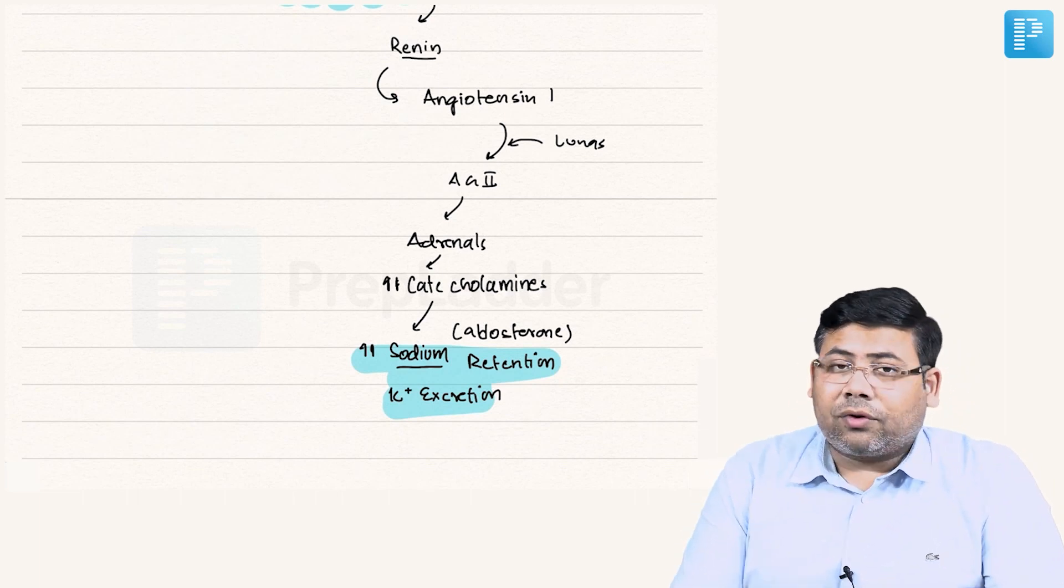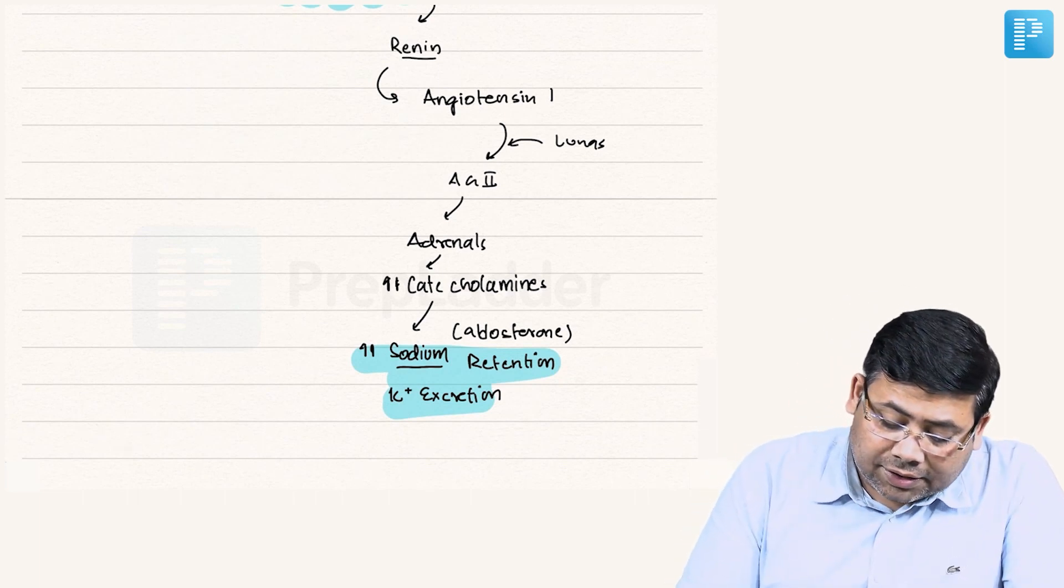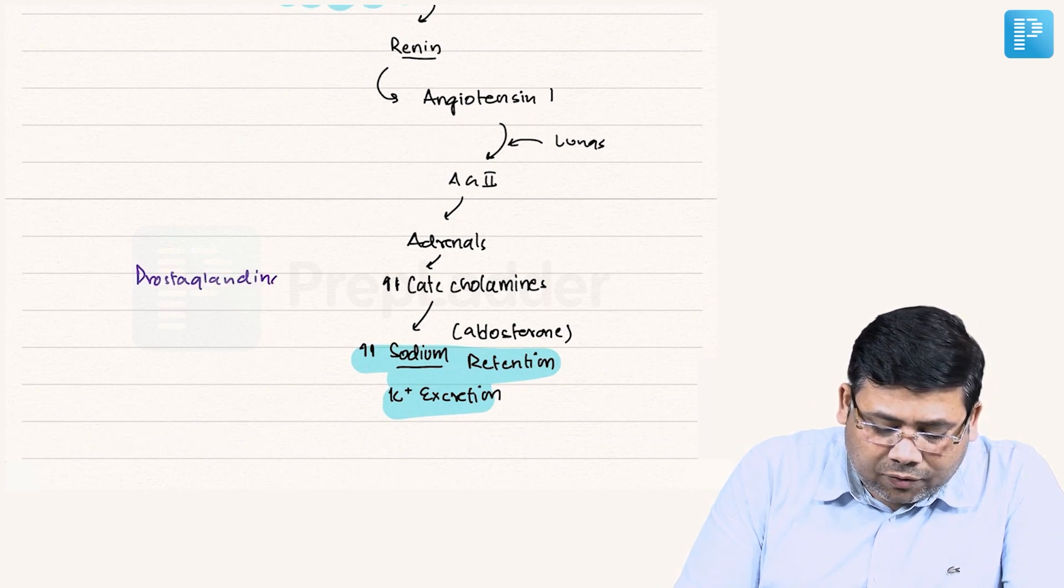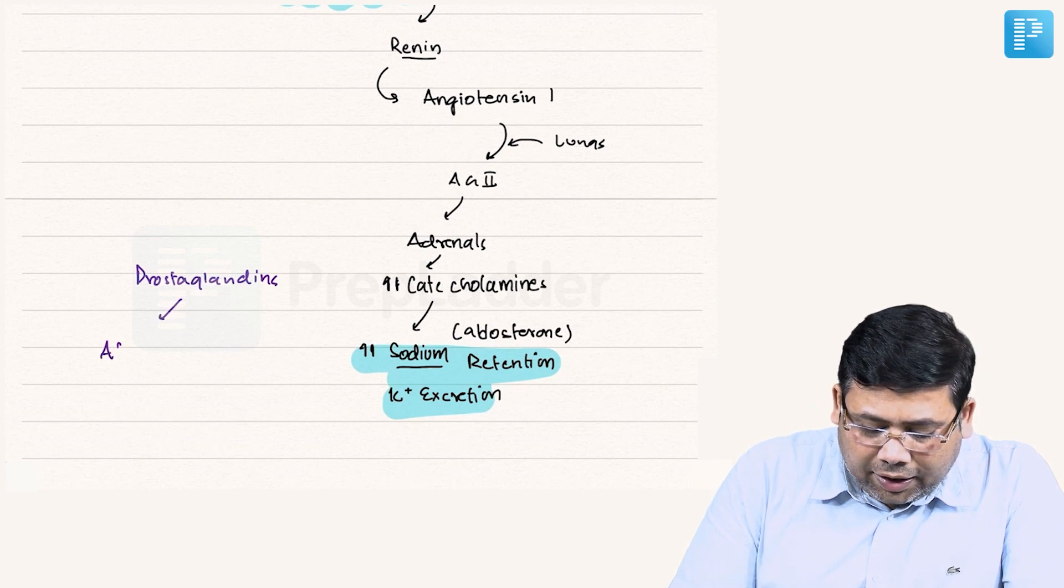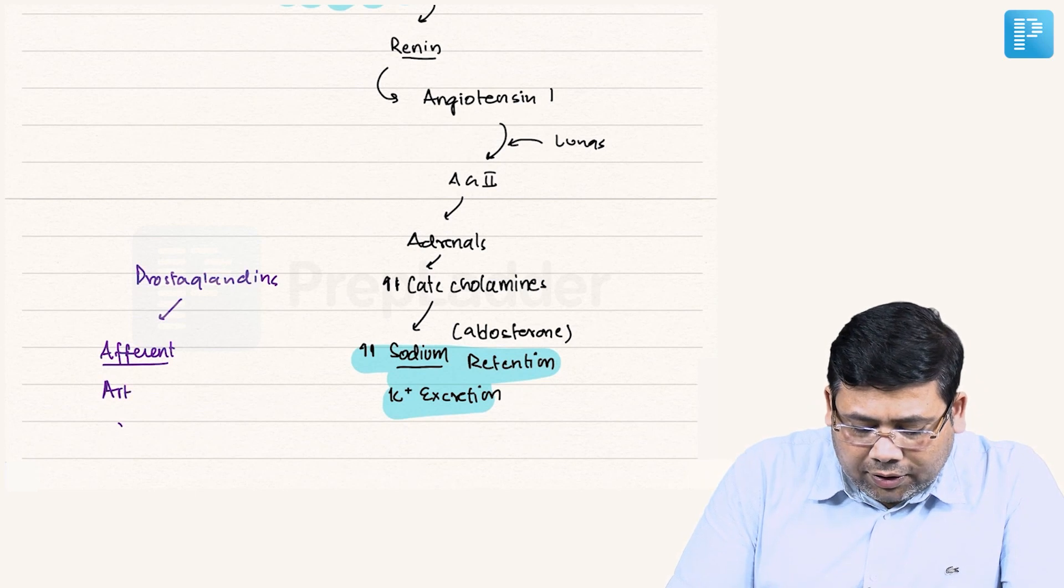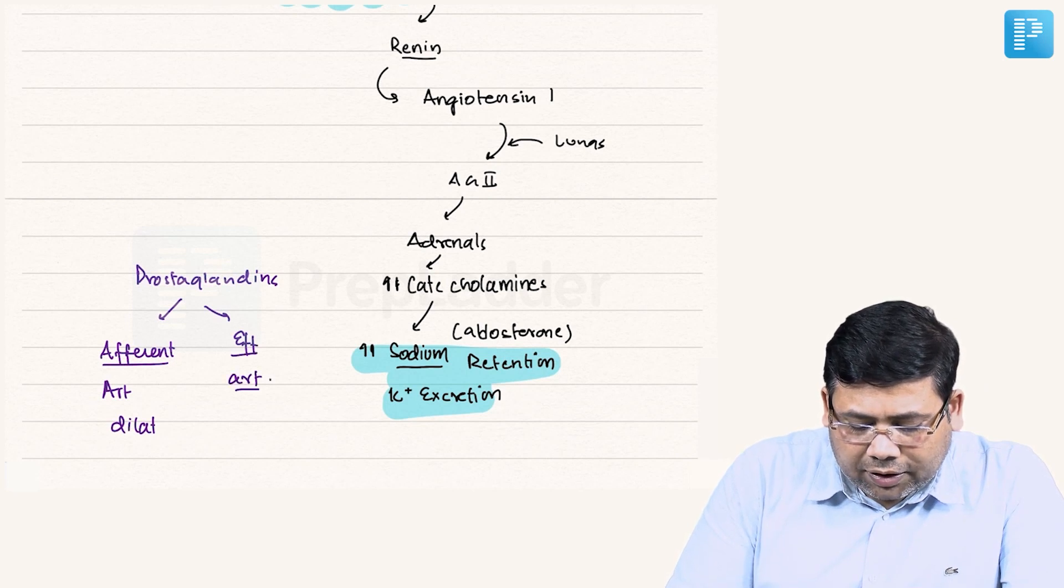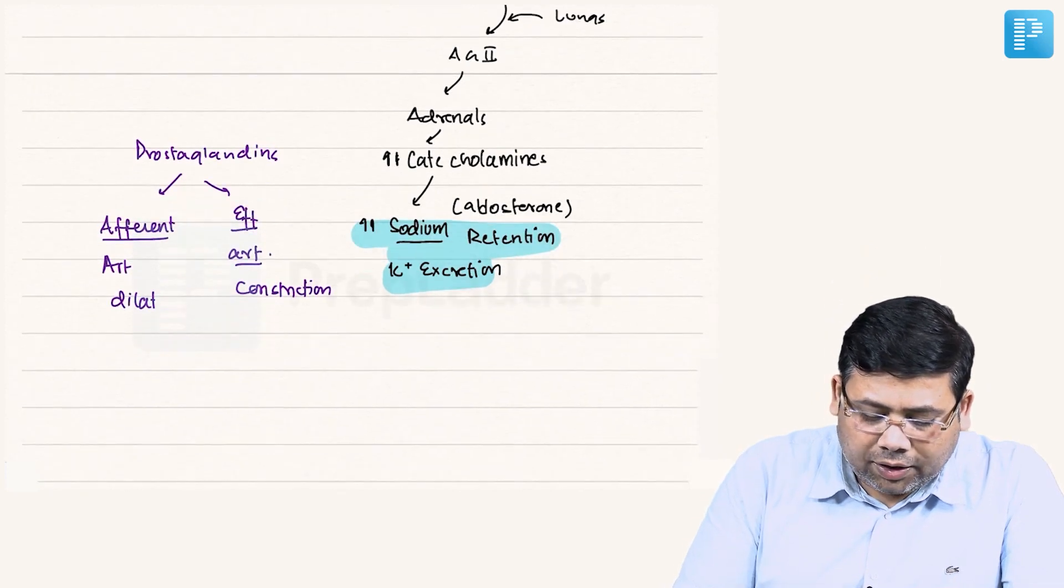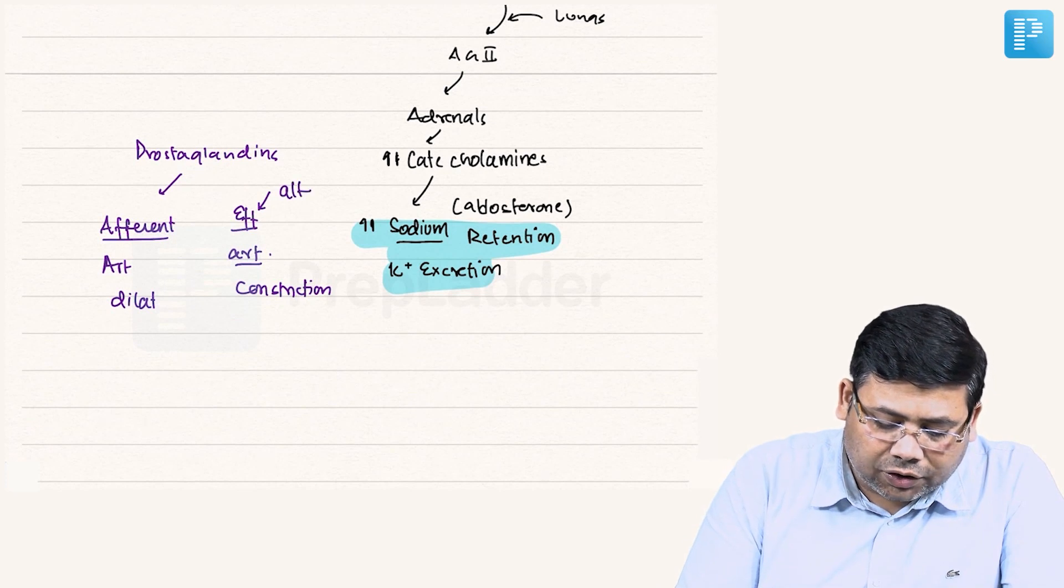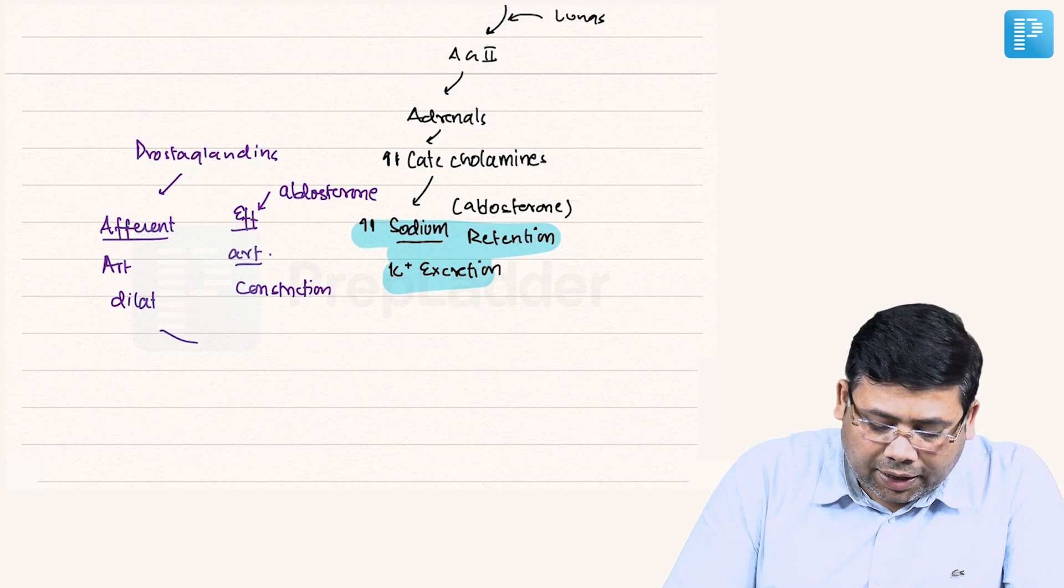The second very important thing is there are prostaglandins also involved. The prostaglandins are going to result in afferent arteriole dilation and efferent arteriole constriction. This is under the effect of aldosterone. So the aldosterone and prostaglandins are helping to maintain the GFR. This is actually maintaining GFR.